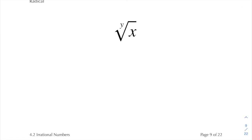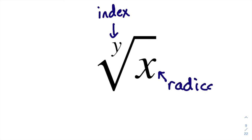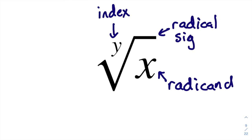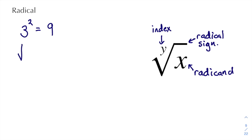Let's take a look at what a radical is — we've got a picture of one right here. The number in the upper-left is called the index. The number underneath the radical sign is called the radicand, and this is the radical sign. A radical is sort of the opposite of an exponent — it undoes what an exponent did, in a similar way to how division undoes multiplication. If we take a number like three, square it, we get nine. To undo that squaring process, we take the square root of nine and that equals three.